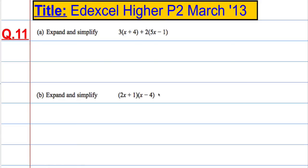A little bit of algebra to do. So part A, we're asked to expand and simplify. So we're going to do 3 times the x, 3x, plus 3 times the 4, or 3 times x and 3 times 4, which is 12, plus 2 times 5x, which is 10x.